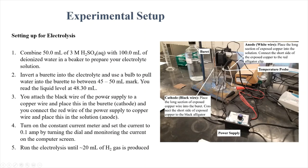Now let's set up the experiment. First, we make the solution to electrolyze: combine 50 mL of 3 M sulfuric acid with 100 mL of deionized water in a beaker, giving 150 mL total. One third is 3 M H₂SO₄, so the final sulfuric acid concentration is 1 M — important because standard conditions require a 1 M solution. This is our electrolyte.